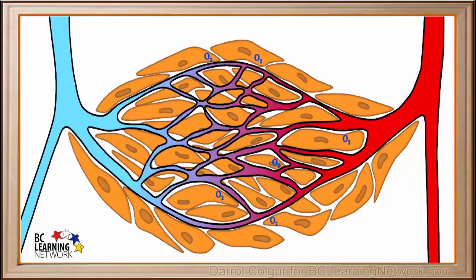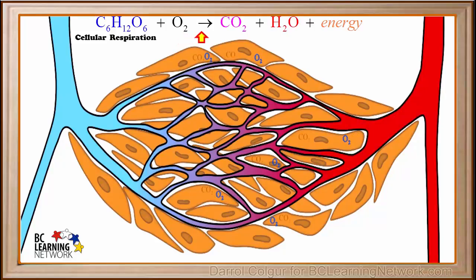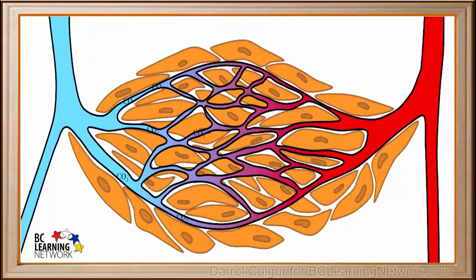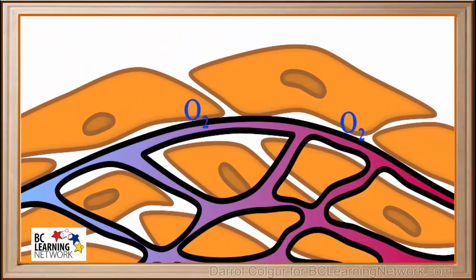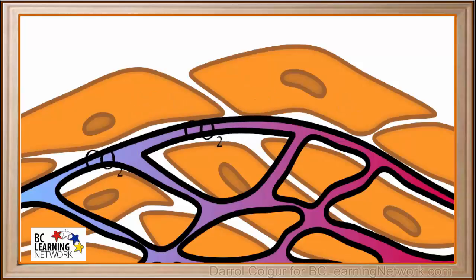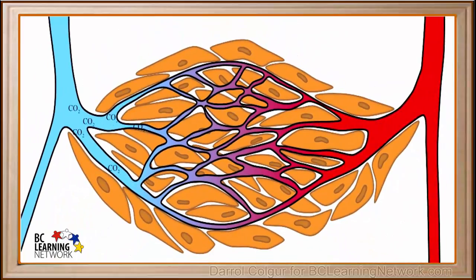Although we've shown only a few here, remember all cells receive oxygen from the blood. As the process of cellular respiration occurs in cells, oxygen is used up and carbon dioxide is produced. The carbon dioxide then diffuses into the capillaries and is carried by the blood into the vein. We see oxygen diffusing into the cells and carbon dioxide diffusing out of the cells into the capillaries and then into the vein.